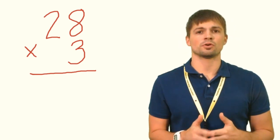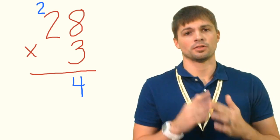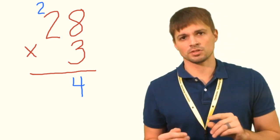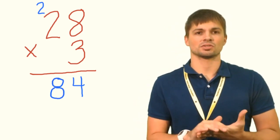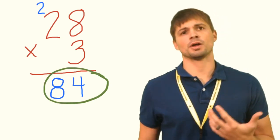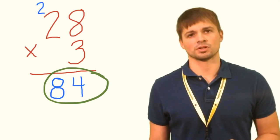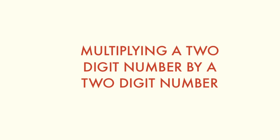The first thing we do is take 8 times 3, which gives us 24. We can't put two digits in one place, so we put down the 4 and carry the 2 above the tens place. Then we do 2 times 3, which is 6, but we must add that carried 2, giving us 8. Putting it all together, we get 84. So the cafeteria would have 84 containers of milk.